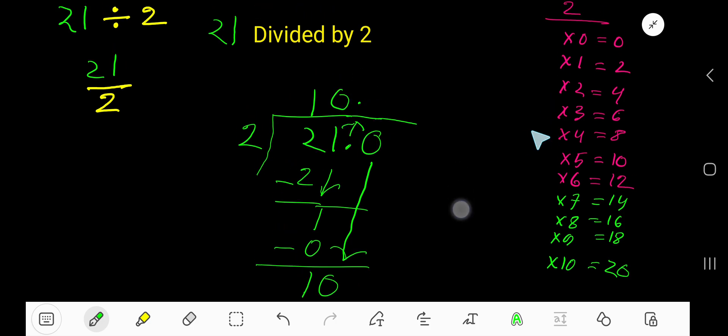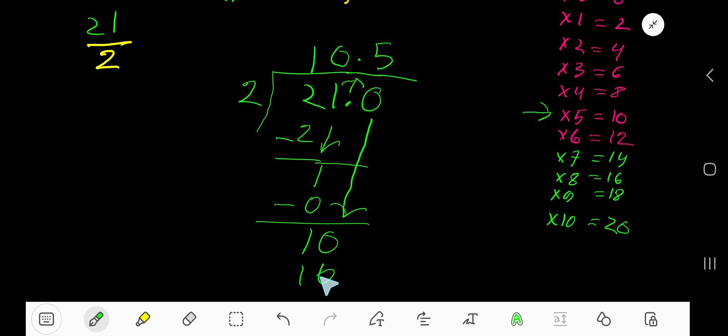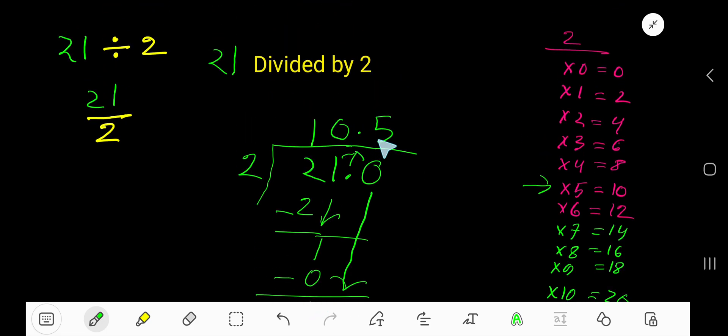So 2 goes into 10 how many times? 10, 5 times. Write 5. 5 times 2, 10. If you subtract, you are getting 0. That is 10.5 is your answer. And remainder is 0.